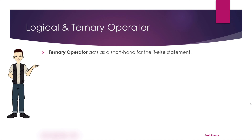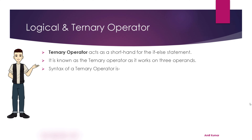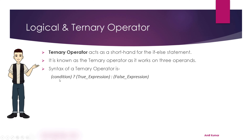The ternary operator acts as a shorthand for the if-else statement. It is known as the ternary operator as it works on three operands. The syntax is: first the condition, then a question mark, then a true expression, then a colon, and finally a false expression. If the given condition is true it will return the true expression; if the given condition is false it will return the false expression. Anything between the question mark and colon is returned if the condition is true, and anything after the colon is returned if the condition is false.